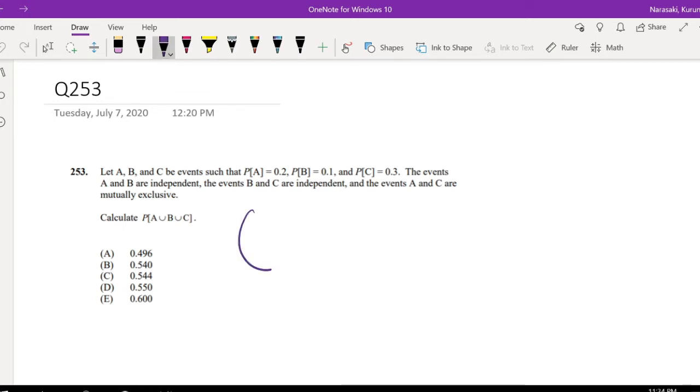So when they say it's mutually exclusive, that means A, if this is A, then C is a completely different story. I'm assuming that B is in here, because it's independent.